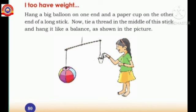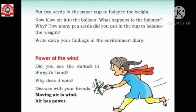Now we are going to study an experiment to prove that air has weight. For this, first we have to take a long stick, then hang a big balloon at one end and a paper cup at the other end. Tie a thread in the middle of the stick and hang it just like a balance, as shown in the picture. Now, if air is blown into the balloon, what happens to the balance?